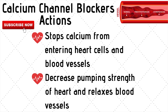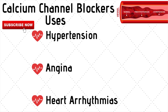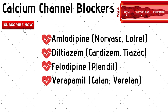Calcium channel blockers — these stop calcium ions from entering your heart cells and your blood vessels, which decreases the strength of your heart and relaxes your blood vessels. They are used for hypertension, angina or chest pain, and heart arrhythmias, which are also known as abnormal heart rhythms. Common calcium channel blockers are amlodipine (Norvasc), diltiazem (Cardizem), felodipine (Plendil), and verapamil (Calan).